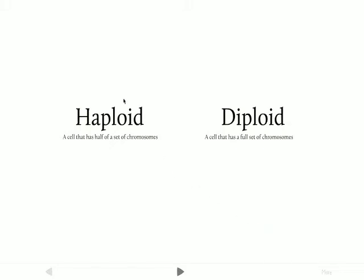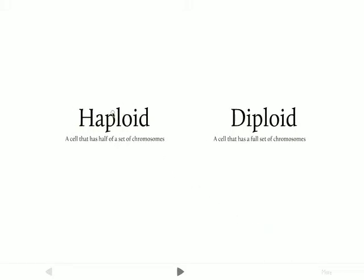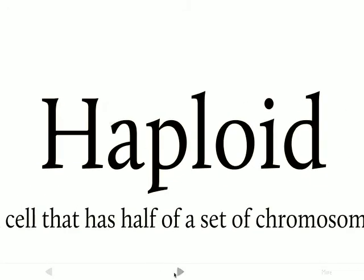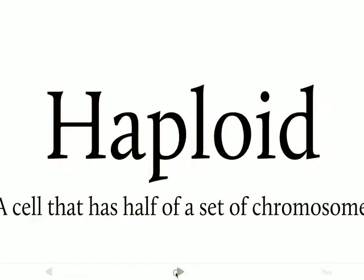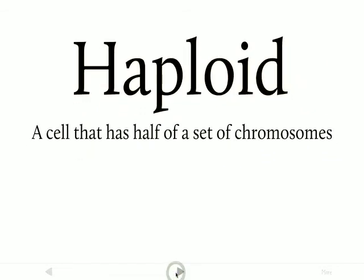The first one is haploid. A haploid cell is a cell that has a half set of chromosomes — it has half as many chromosomes as its parent cell had. So if the parent cell started out with ten chromosomes, a haploid cell would then have five chromosomes.